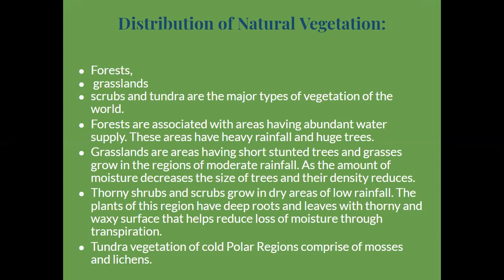Tundra vegetation of cold polar regions comprises mosses and lichens. These are found in the north polar regions.